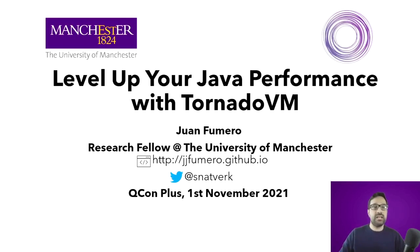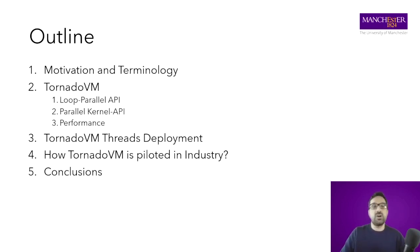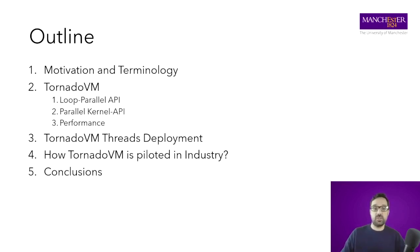I hope I've piqued your curiosity. I'm Juan Fumero, a research fellow at the University of Manchester and the lead developer and architect of the TornadoVM project. Today I'm going to talk about the following topics: introducing the technology and motivating the project further, then diving into programmability. TornadoVM currently has two APIs: the Loop Parallel API and the Parallel Kernel API. I'll explain each, show performance results, explain how TornadoVM maps applications to parallel hardware, and show industry use cases.